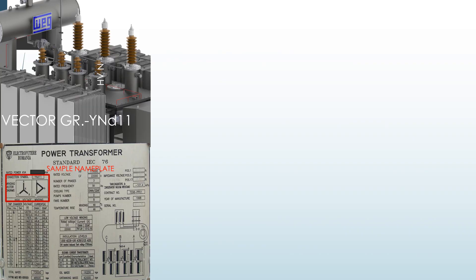Now we are going to test vector group of the transformer YND11. The YND11 transformer designates a specific winding configuration and phase relationship between primary and secondary winding. Specifically, it indicates a star connected primary with a neutral point to earth and a delta connected secondary winding.